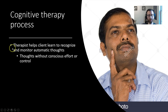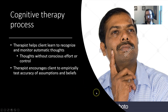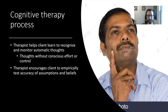The therapist and client learn together to recognize and monitor automatic thoughts. The therapist then asks the client to empirically test the validity of those assumptions. For example, if a client believes they always need other people's help, the therapist might ask 'Is that always true? How did you get here today? Think of something you've done on your own.' The client might realize they've accomplished many things independently. By thinking through this together, they find that the maladaptive belief isn't accurate. The client is encouraged to contribute to the evaluation of logic and accuracy of those automatic thoughts — it's a collaborative conversation, not the therapist simply saying 'here's what you're doing wrong.'